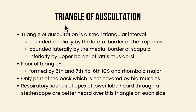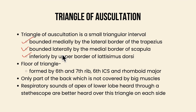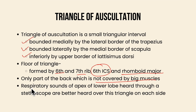To concise the points of the triangle of auscultation: it is a small triangular interval bounded medially by the lateral border of the trapezius, bounded laterally by the medial border of the scapula, and bounded inferiorly by the upper border of the latissimus dorsi. The floor of the triangle is formed by the sixth and seventh rib, the sixth intercostal space and the rhomboid major muscle. This is the only part of the back not covered by big muscles, and the respiratory sounds of the apex of the lower lobe of the lung heard through a stethoscope are better heard over this triangle on each side of the body.